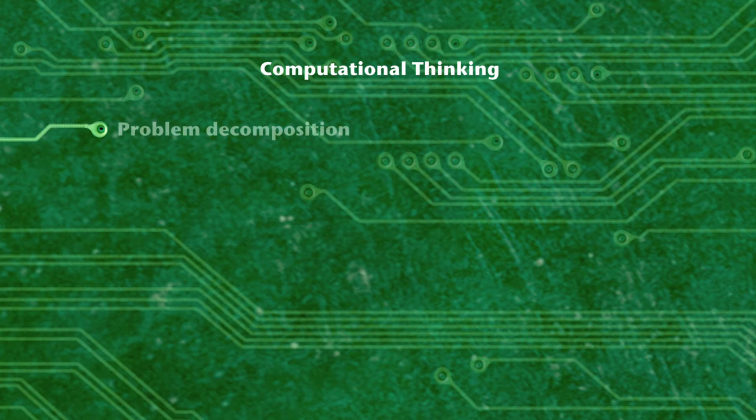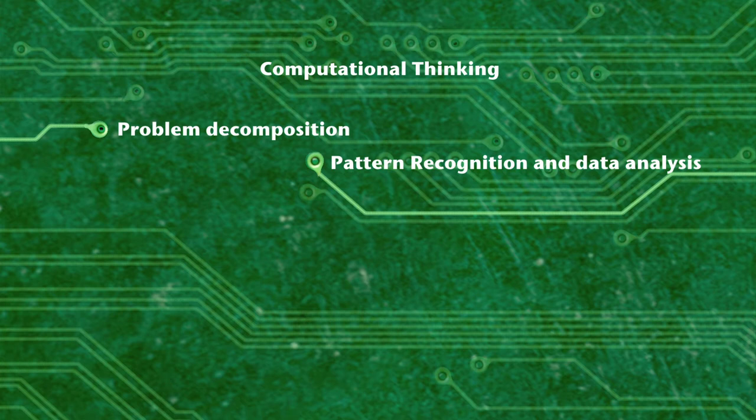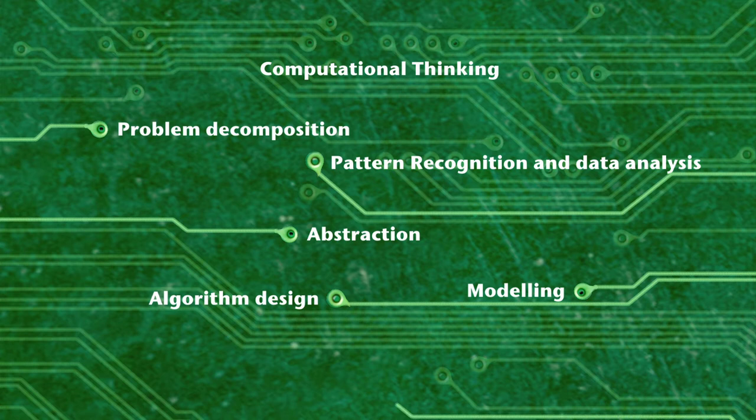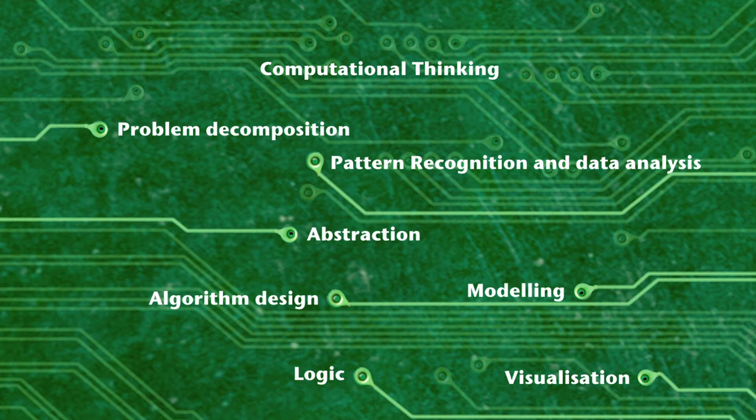But the most important feature of computer science teaching is computational thinking. This includes problem decomposition — breaking down complex things into smaller units — pattern recognition and data analysis to better understand what is happening, abstraction to remove unnecessary detail from complex situations, modelling using the computer to represent real activities, algorithm design to plan the sequence of actions, logic using boolean operators of AND, OR and NOT, and visualisation — developing skills to understand different diagrammatic forms and create images to represent systems and processes.